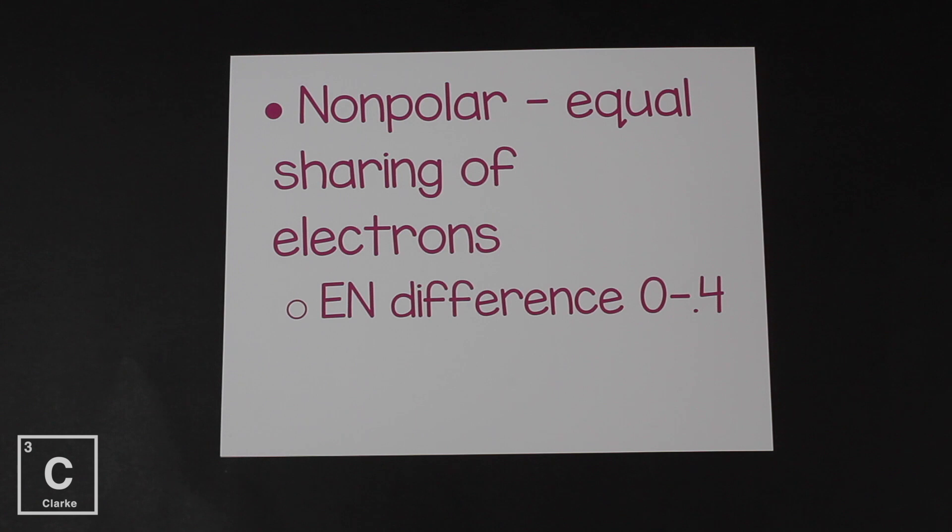Nonpolar has no poles, no attraction, because it's equal sharing. The two elements share the electrons equally. And so if we were to look at the electronegativity chart and subtract those two elements, the difference would be somewhere between 0.4 and 0 to be considered a nonpolar bond.